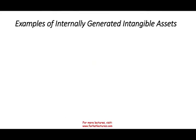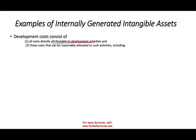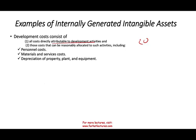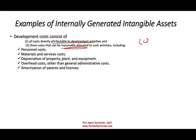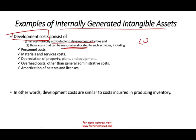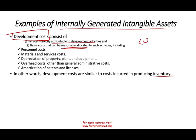Let's look at some examples of internally generated intangible development costs. Costs directly attributed to development activities and costs that can be reasonably allocated include: personnel costs for assigned employees even if part-time, material and service costs, depreciation of property, plant, and equipment used in the project, overhead costs, and amortization of patents and licenses. Any cost reasonably allocated to that project can be part of the development cost — very similar to producing inventory with labor, material, and overhead.